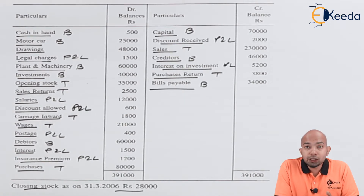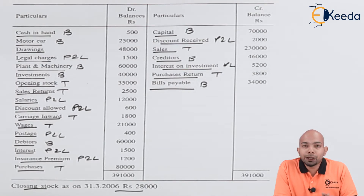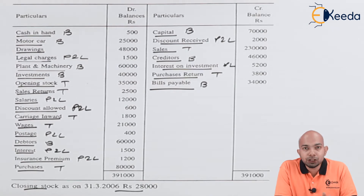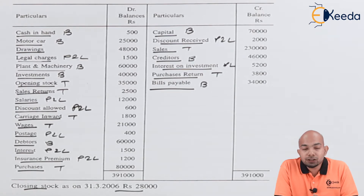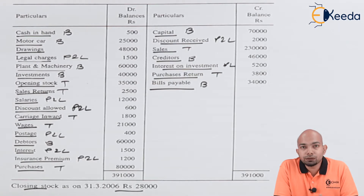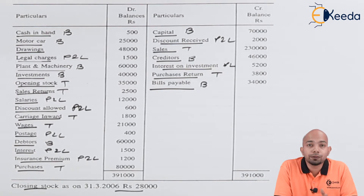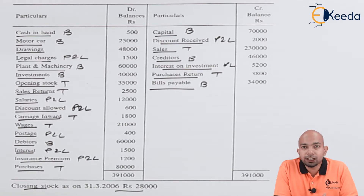Closing stock, mentioned in the adjustment, will have two effects: the first will be a part of the trading account credit side, and the second will be mentioned in the balance sheet asset side. Now that we've identified all the items for balance sheet, profit and loss account, and trading account, let's prepare each account in detail and figure out the net profit or gross profit.